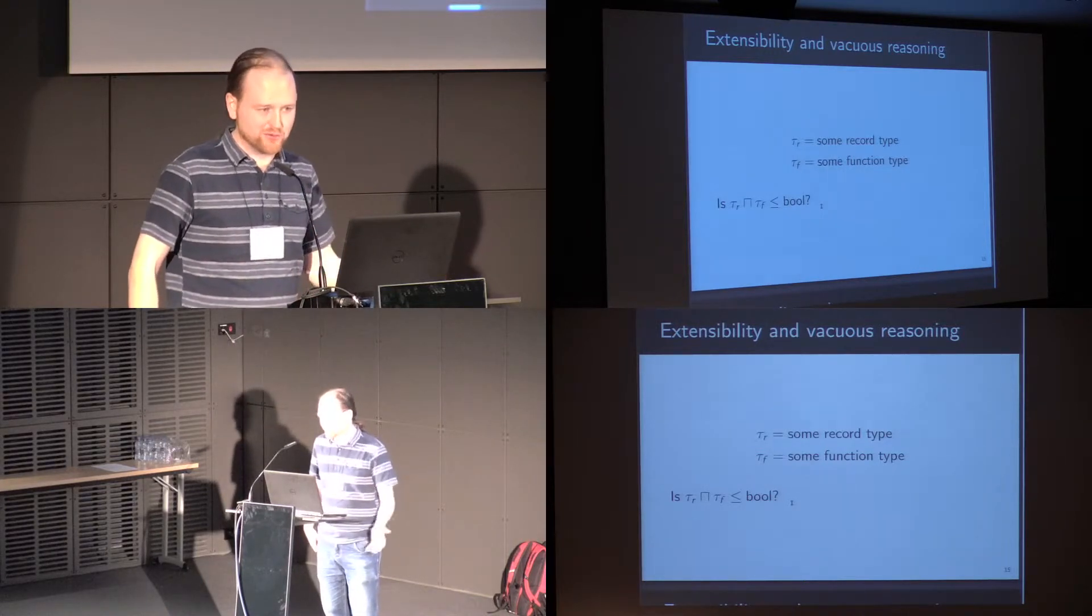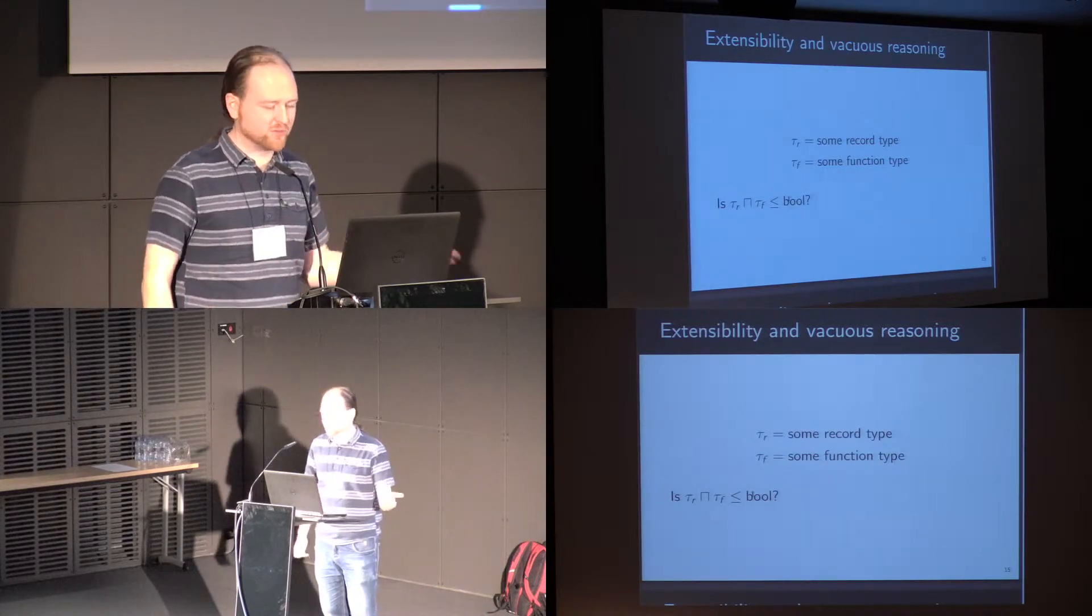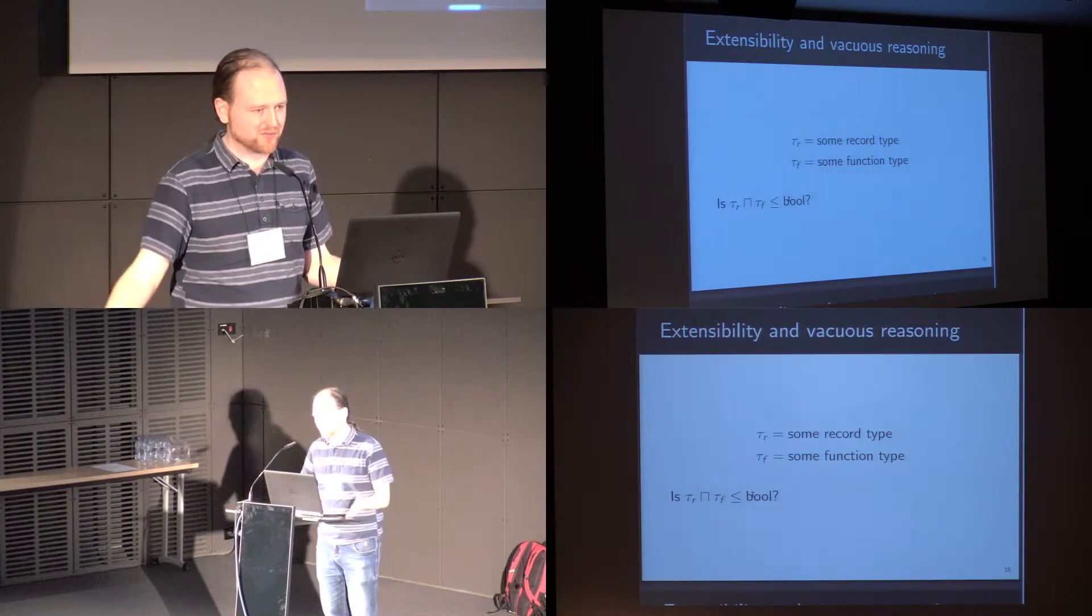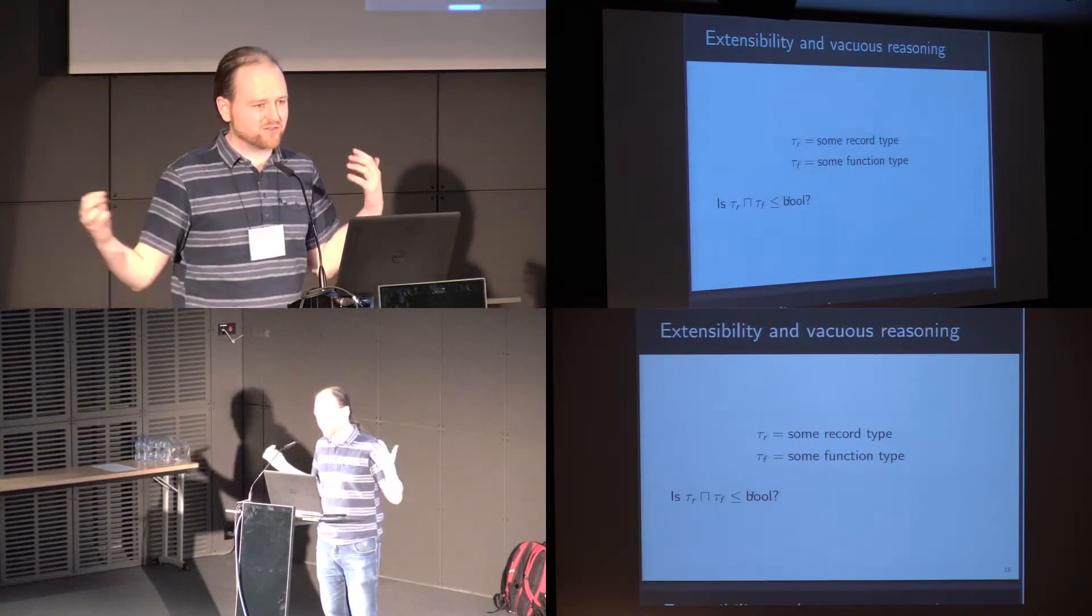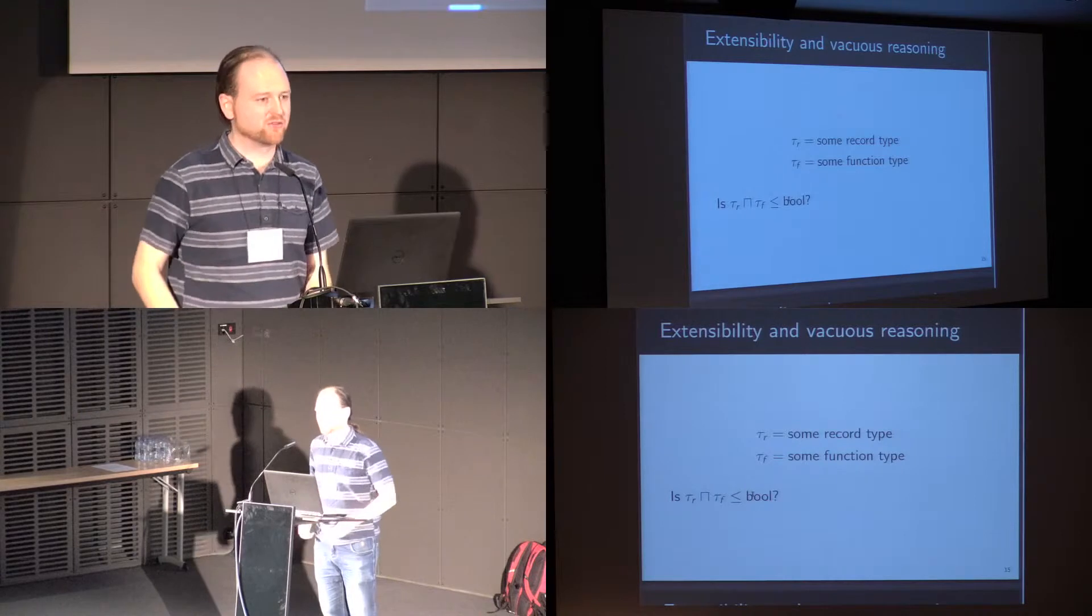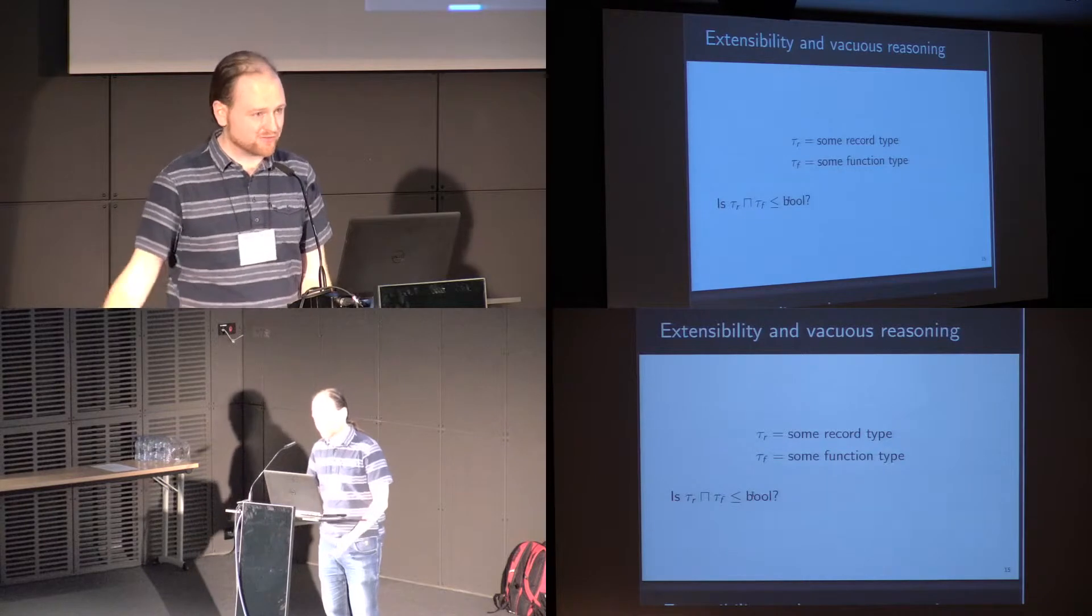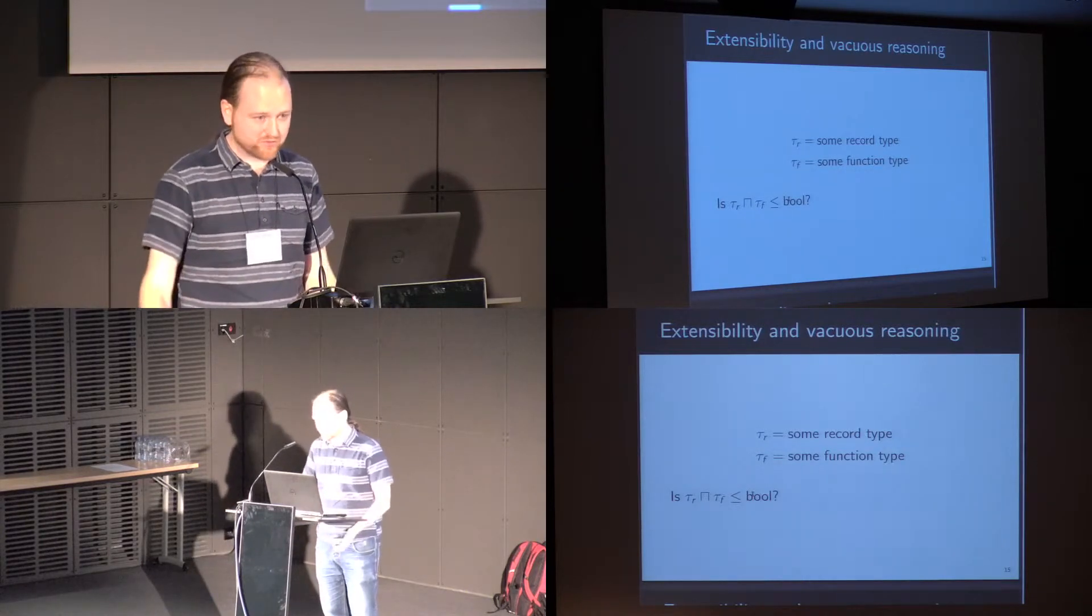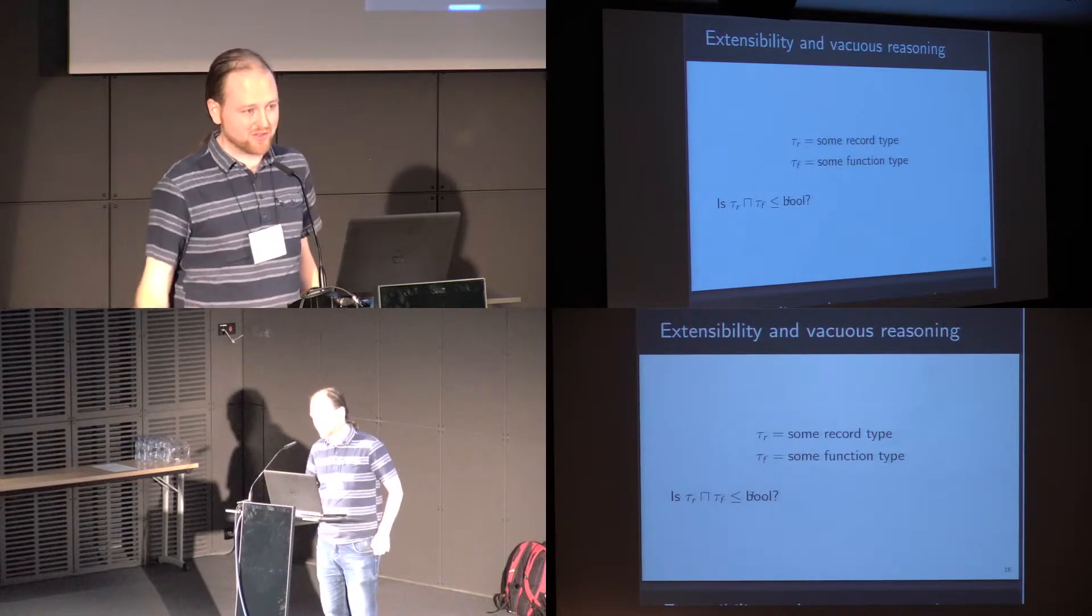What this is saying is that there can be nothing which is both a record and a function which is not also a boolean. So it's saying that the language designer is then unable to add things which are both records and functions. You can never extend a language with something which can both be applied and projected from, even though several languages like C++ and Python didn't originally have such objects, but they were later added.